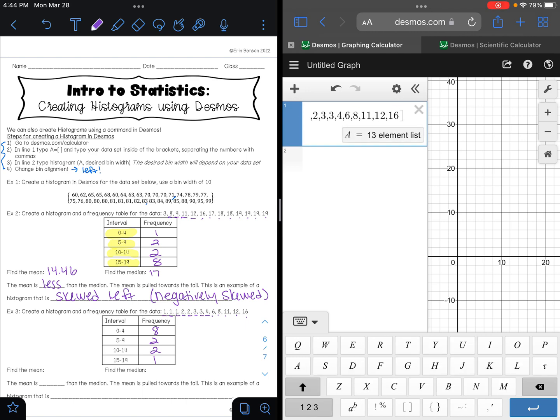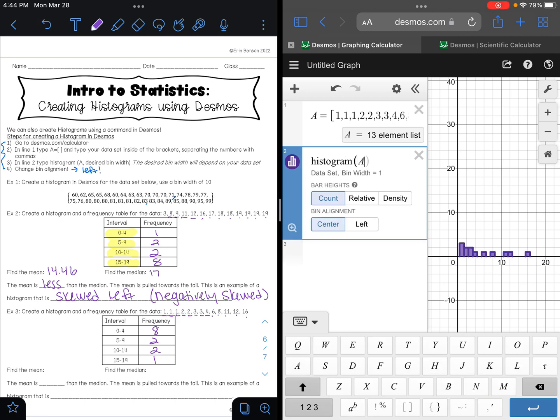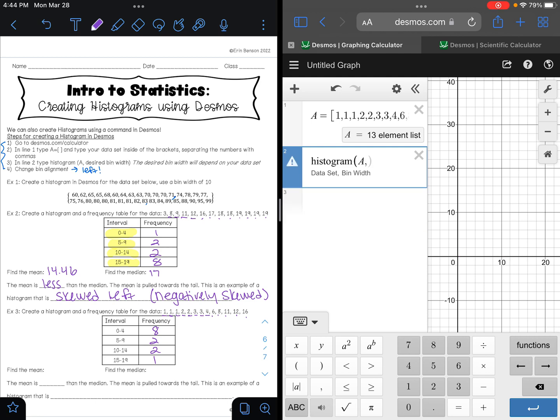We want to make our histogram. We're going to find our histogram of list A, and again our intervals are all five numbers wide, so that means that our bin width is five. So we want to change our bin alignment to left and I'm just going to zoom in on that.